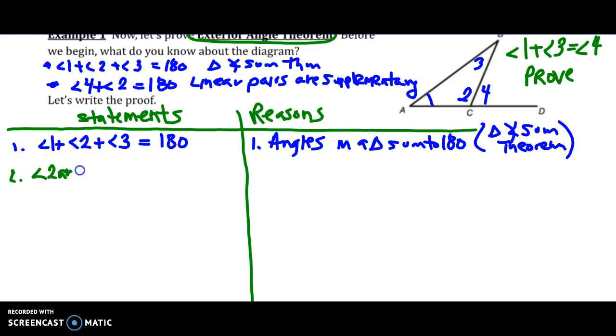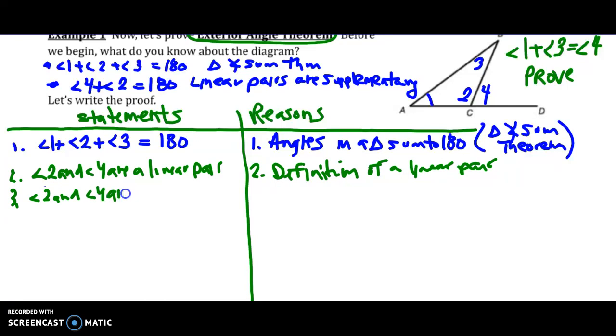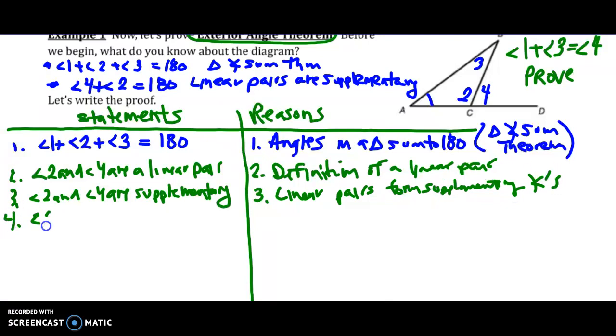Then we know that angle 2 and angle 4 are a linear pair. We know that linear pairs are supplementary, so angle 2 and angle 4 are supplementary. Again, one of those package deals that we discussed on our very first day in Lesson 6. Number 4: angle 2 plus angle 4 equals 180 - definition of supplementary angles.